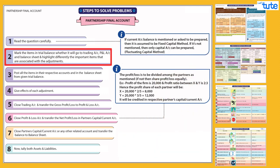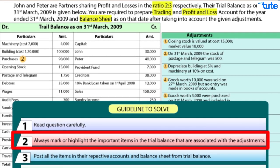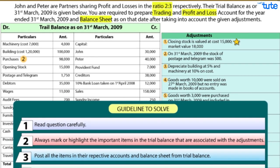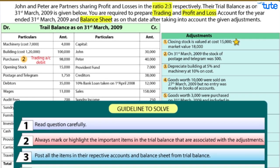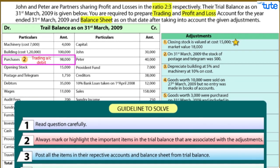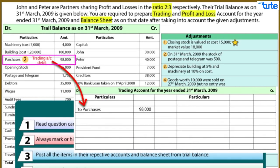Also, while reading, it would be preferable to do markings in the question, as while posting trial balance items you need to leave space for the adjustments. That would also help in knowing which items go in which account.